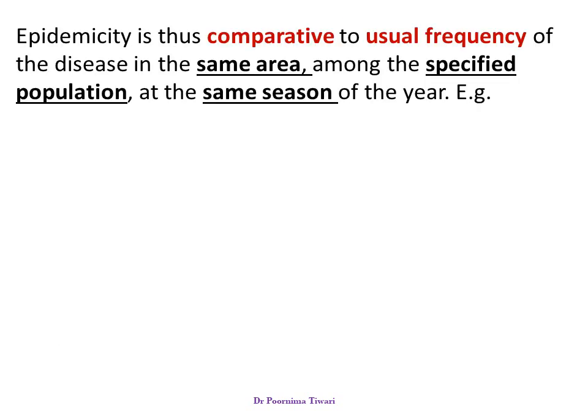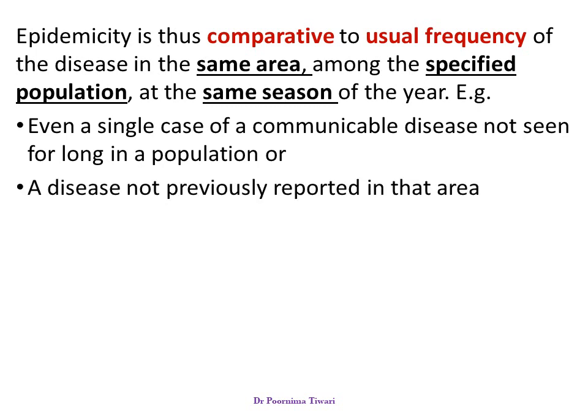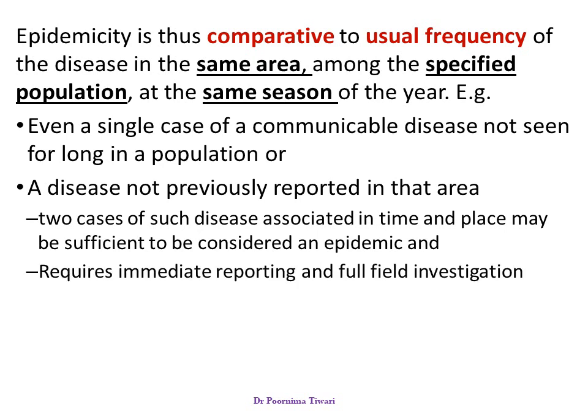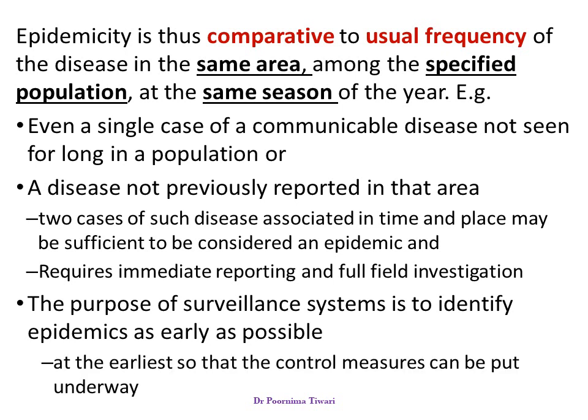Epidemicity is comparative to what is the usual number of cases for that area among the specified population and for the same season of the year. For example, a disease which has not been seen for many years in a community — even a single case of that communicable disease may be sufficient for declaration of an epidemic. Just two cases of a disease which has never been seen in an area, detected close together in time, may be sufficient. Once an epidemic is declared, it requires immediate action and full investigation. Surveillance systems have been put in place to identify an unusual number of cases as early as possible so that control measures can be implemented promptly.